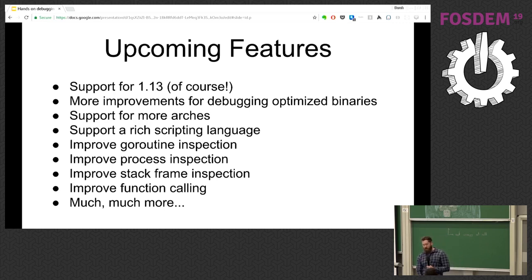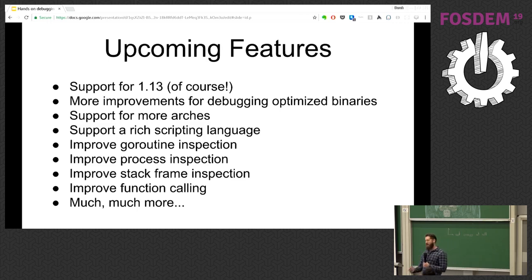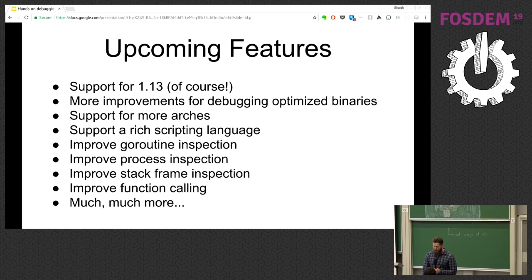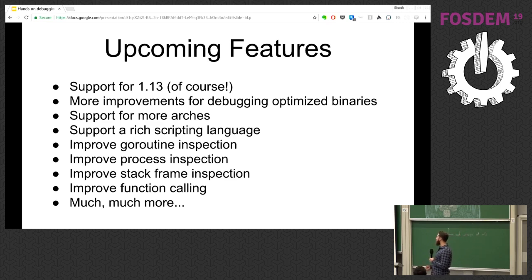A big one is adding support for more architectures. Right now our support matrix is x86-64, and we want to add ARM and 32-bit architectures — this is a place where community contributions can really shine. Another huge feature we're looking to add is supporting a scripting language. Instead of just interacting with Delve through the API, we're looking at adding integration with a scripting language.